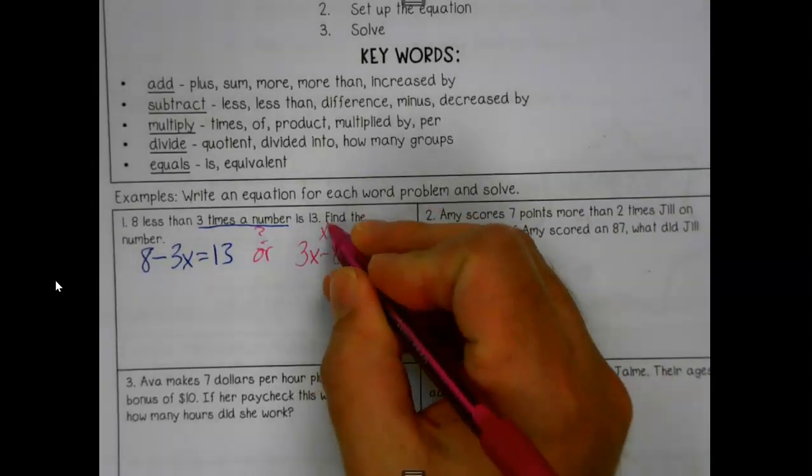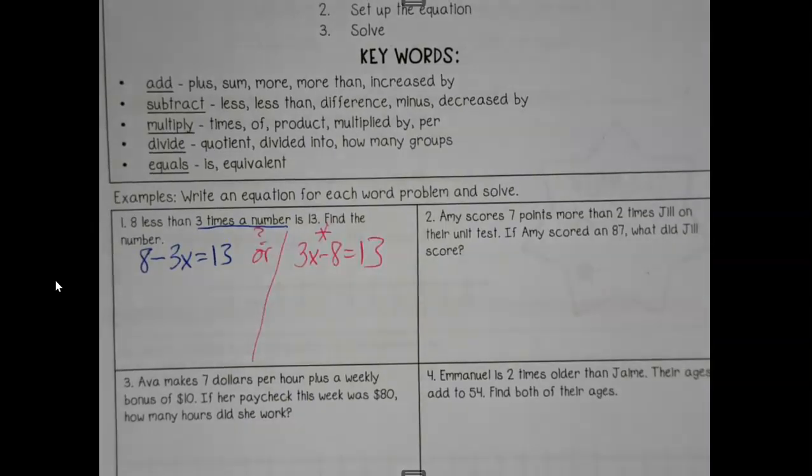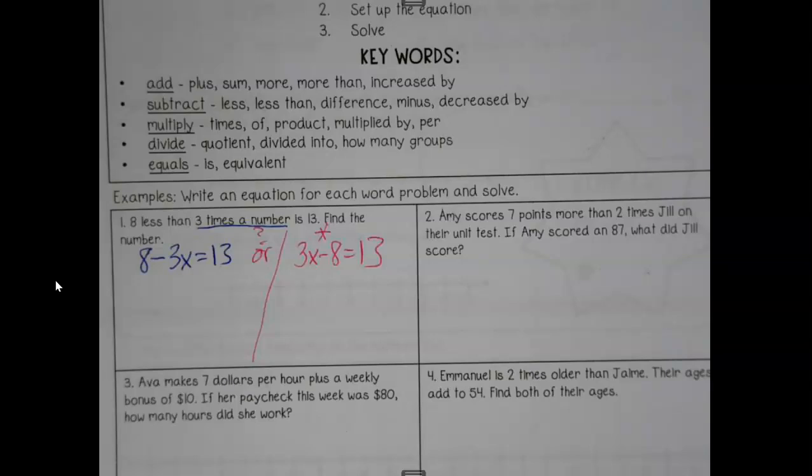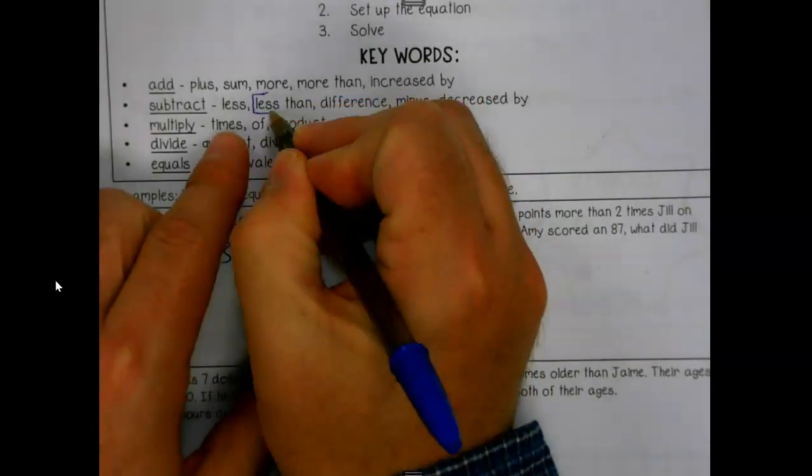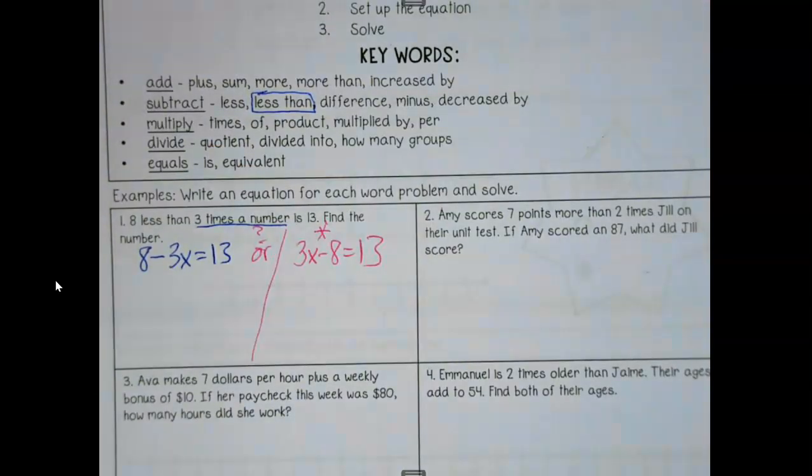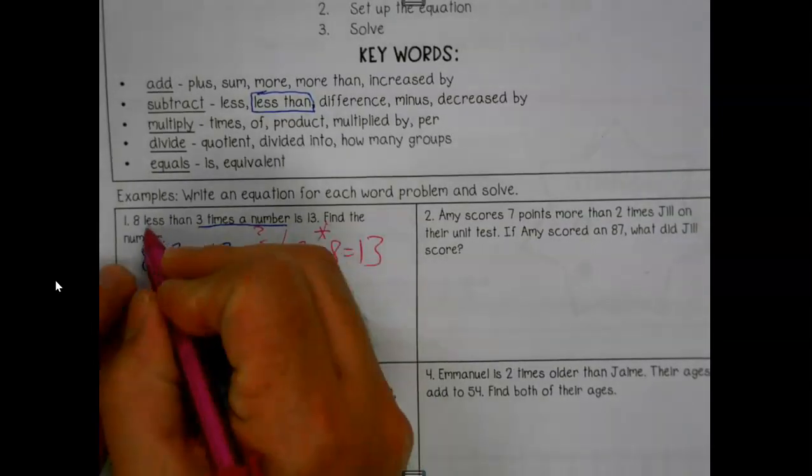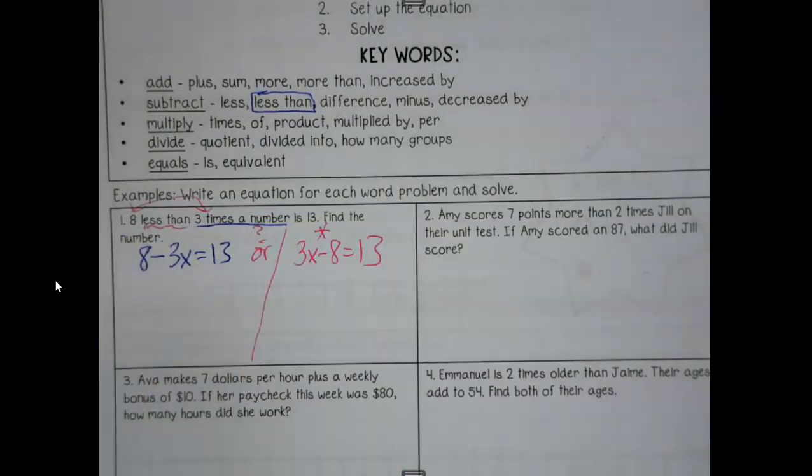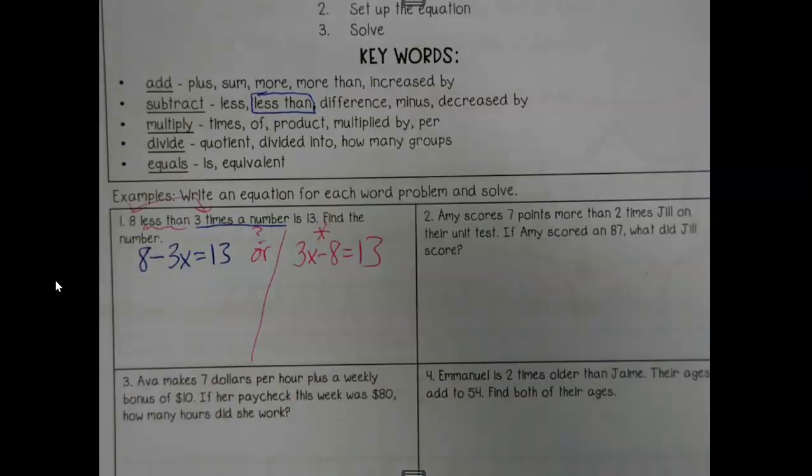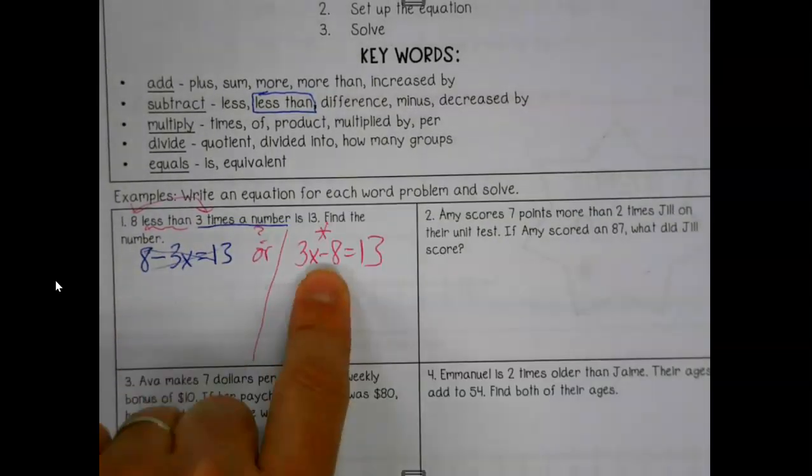But the question now becomes which order these go in. Let's read it back one more time. Eight less than three times the number. Take away eight from three times the number. So which one is it, is it pink or blue? It's pink. So here's one thing to be aware of. When you see the word less than, that's the one time that your order is going to switch.